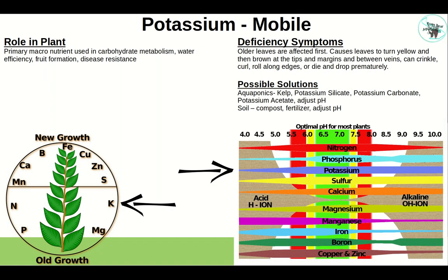Potassium is a mobile primary nutrient used in carbohydrate metabolism, water efficiency, fruit formation, and disease resistance. Deficiency symptoms: old leaves are affected first, causing leaves to turn yellow then brown at the tips, margins, and between the veins; leaves can crinkle, curl, roll along the edges, die, and drop off prematurely. In aquaponics: kelp, potassium silicate, potassium carbonate, potassium acetate, and adjust pH. In soil: compost, fertilizer, kelp, potassium silicate, potassium carbonate; potassium acetate for emergencies. Anything below pH 6 reduces potassium availability.